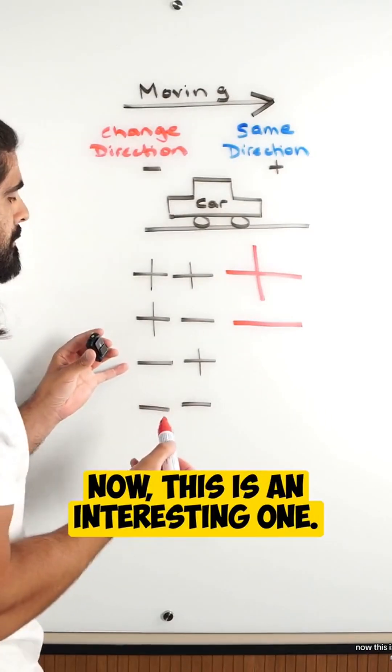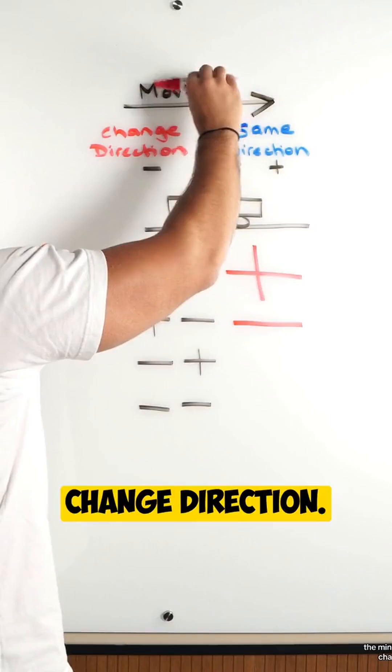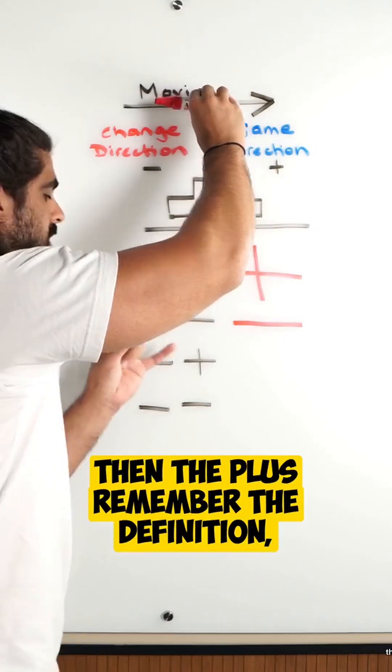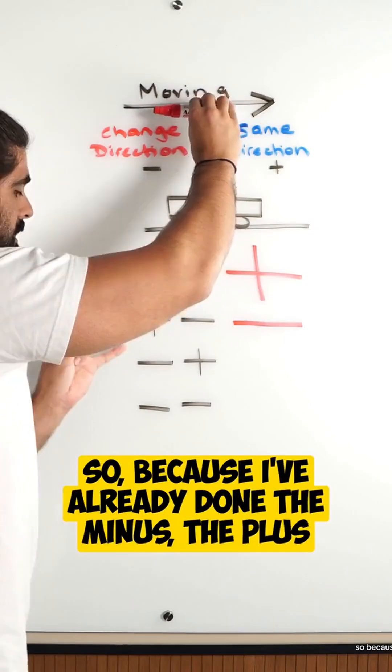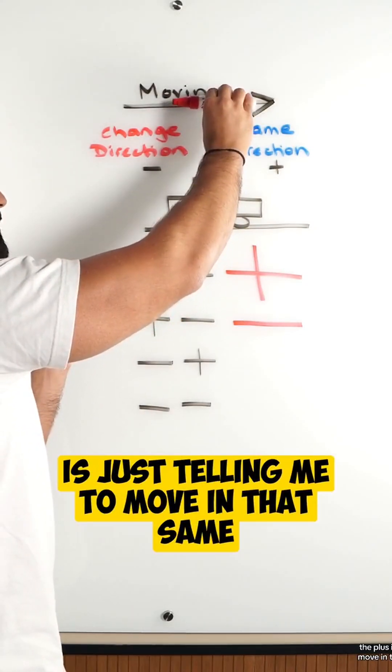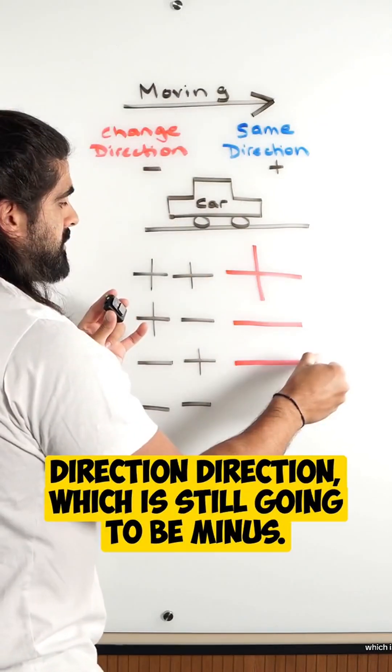This is an interesting one: minus plus. The minus is telling me to change direction. Then the plus, remember the definition, stay in the same direction. So because I've already done the minus, the plus is just telling me to move in that same direction, which is still going to be minus.